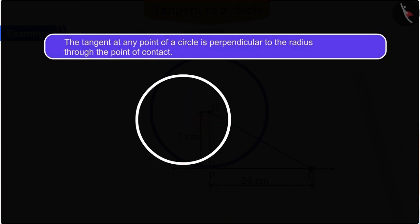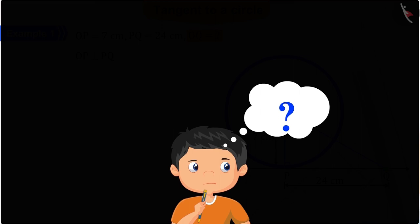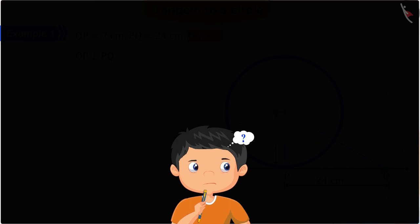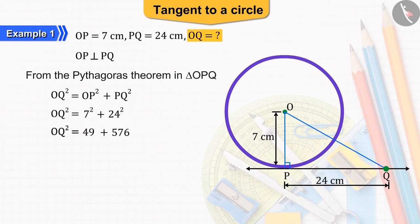We know that the tangent at any point of a circle is perpendicular to the radius through the point of contact. So, OP will be perpendicular to PQ. Can you tell what to do next? Absolutely right! We can use Pythagoras theorem in the triangle OPQ. From which, we get square of OQ equal to square of OP plus square of PQ. On substituting and solving, we get OQ equals to 25 cm.